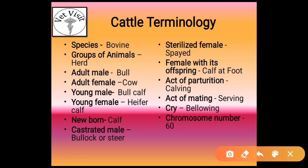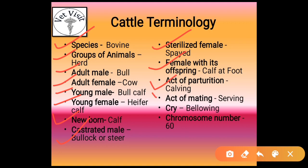For cattle, the species is bovine. The group of cattle is known as a herd. Adult male is known as bull. Adult female is known as cow. Young male is known as bull calf. Young female is known as heifer calf. Newborn is known as calf. Castrated male is known as bullock or steer. Sterilized female is known as spayed. Female with its offspring is known as calf at foot. Act of parturition is known as calving. Act of mating is known as serving. Cry is known as bellowing. Chromosome number is 60.